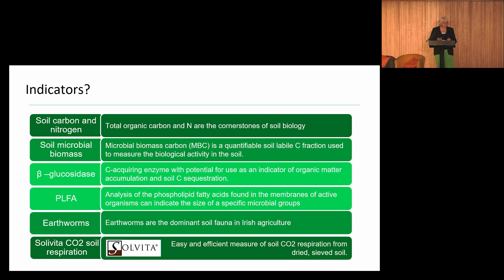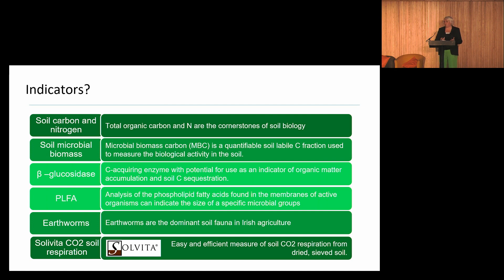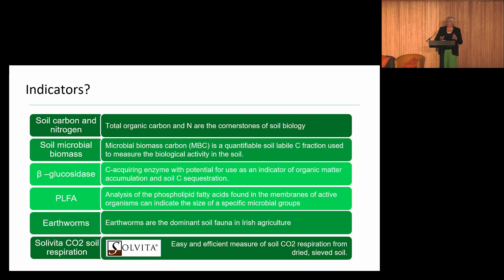Beta-glucosidase is a soil enzyme related to carbon metabolism and also an indicator of organic matter accumulation and soil carbon sequestration. This was included to see if it could act as a proxy for changing carbon, and we do have initial indications that is the case. There is also work going on in the Soil Nutrient Health Scheme analysing a whole range of enzymes, but when we established this project our focus was beta-glucosidase.